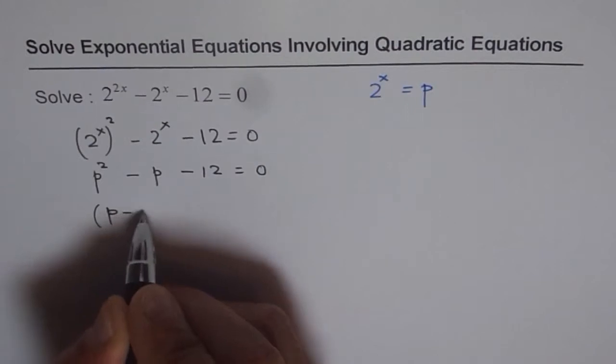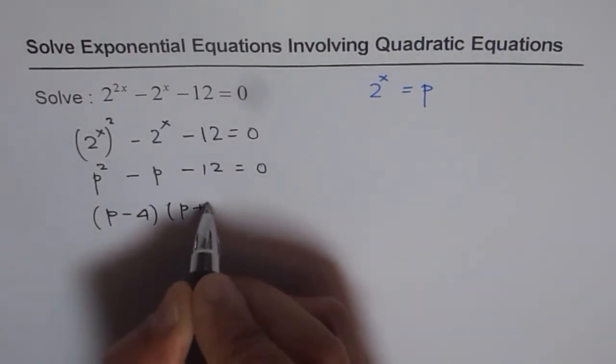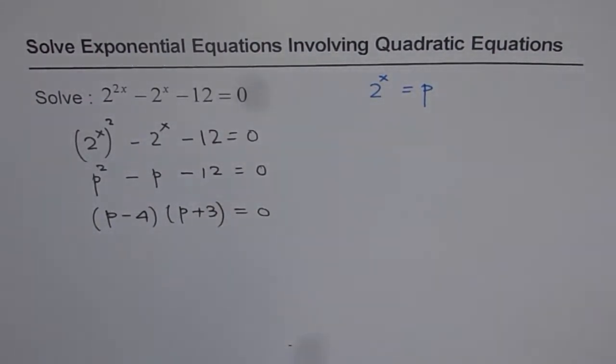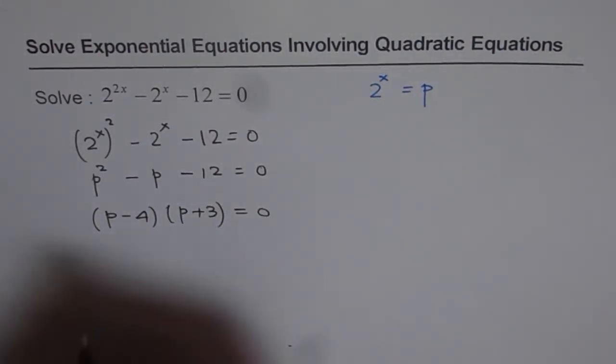So I get p minus 4 times p plus 3 in the factored form. So that is the solution, close to solution I should say.